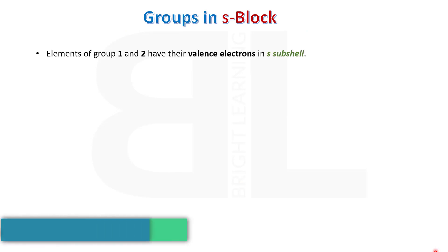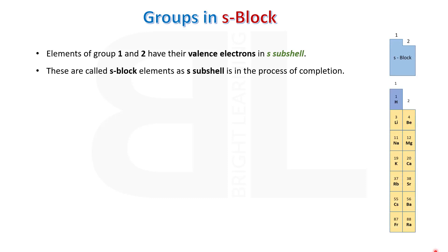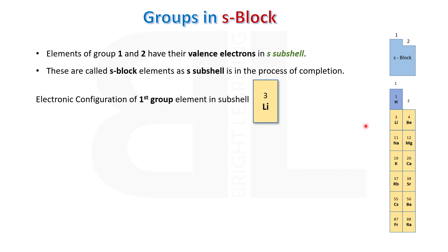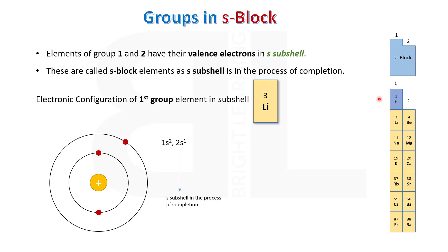Elements of group 1 and 2 have their valence electrons in S subshell. These are called S block elements, as S subshell is in the process of completion. Group number 1, except hydrogen, all the elements are called alkali metals. When we study the electronic configuration of first group elements, we find that in all the elements, only S subshell is in the process of completion.